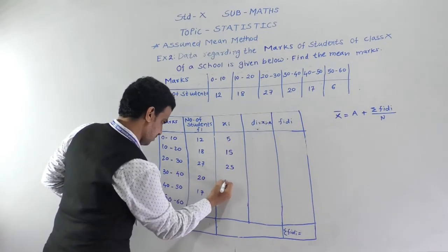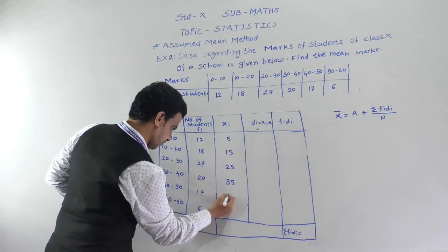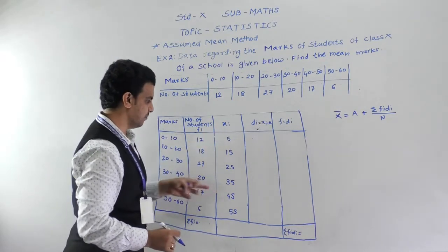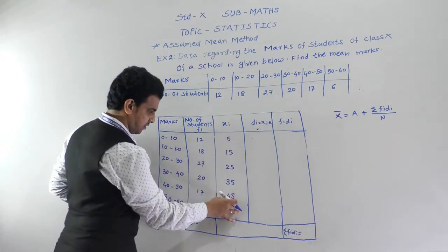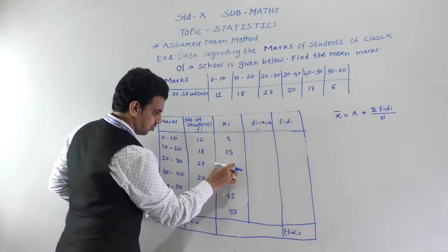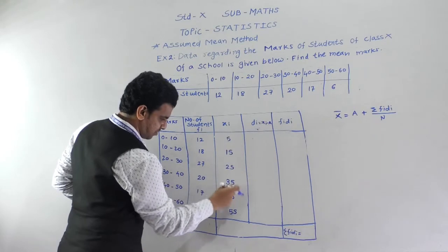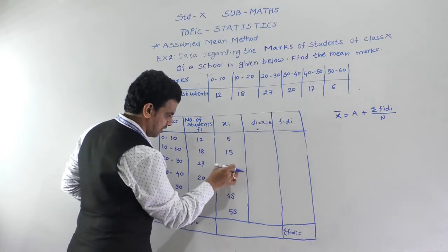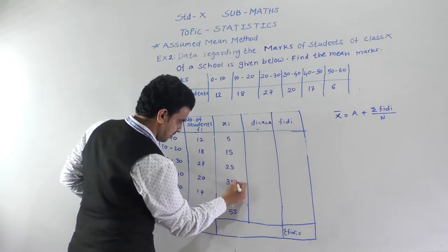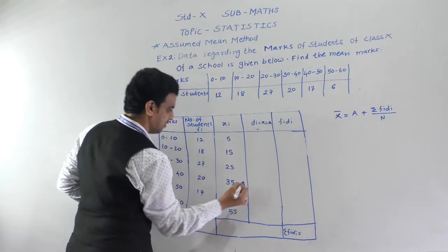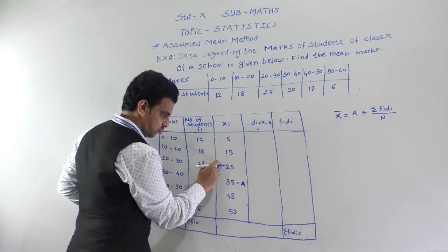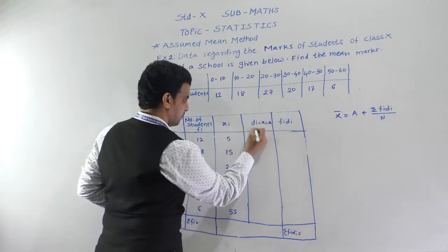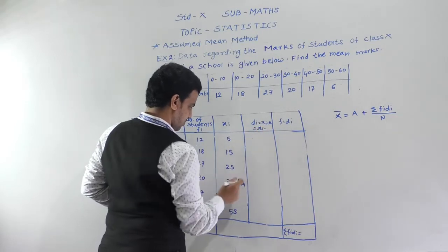Here there is an even number of observations — six — so there are two middle values (3rd and 4th). We can choose either one as the assumed mean A. I am choosing A = 35 (you could also choose 25 and get the same answer). Now we find di = xi − 35.